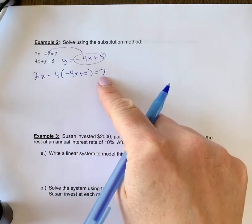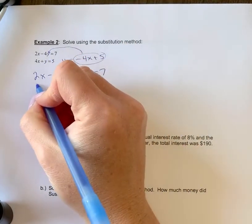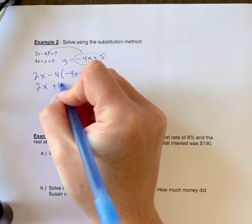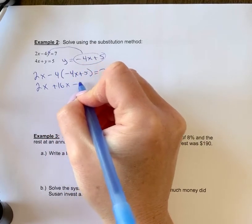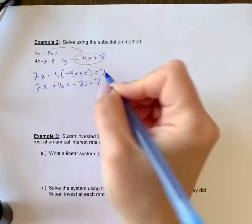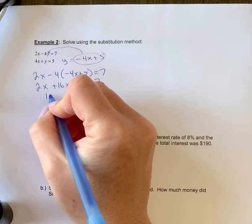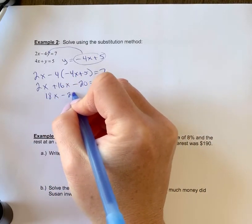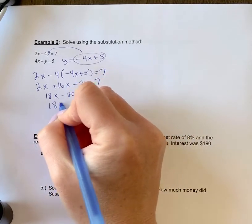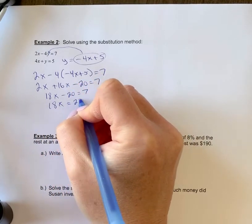Now you only have an x value in this equation to solve for. You get 2x plus 16x minus 20 equals 7. 18x minus 20 equals 7. 18x equals 27.